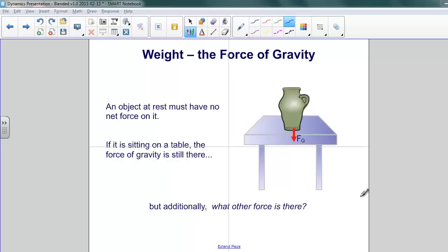So we can conclude from that that the net force acting on the jug is zero. But we also know that there's a force of gravity pulling down on that jug, pulling it against the table.